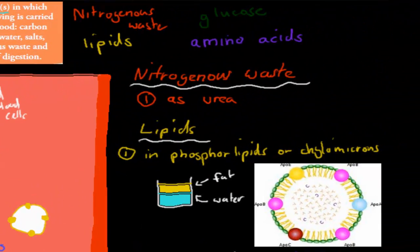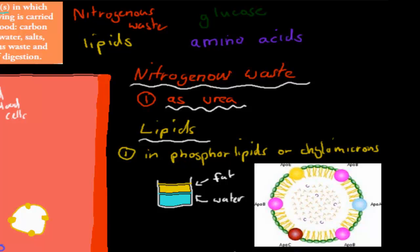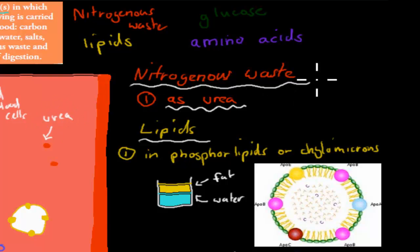Nitrogenous waste comes from the breakdown of protein. The main way it travels is as urea, which is dissolved in water or plasma. A small amount also travels as ammonia and uric acid, but the vast majority is urea.